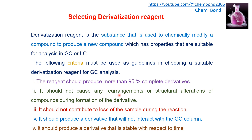The reagent should not cause any rearrangement or structural alteration of the compound during formation of the derivative. The derivatization reagent should specifically target one functional group in the analyte molecule, but the overall structure of the compound should remain the same. It should not contribute to any loss of sample during the reaction. It should produce a derivative that will not interact with the GC column, as interaction with the GC column will cause a tailing effect. It should produce a derivative that is stable with respect to time.